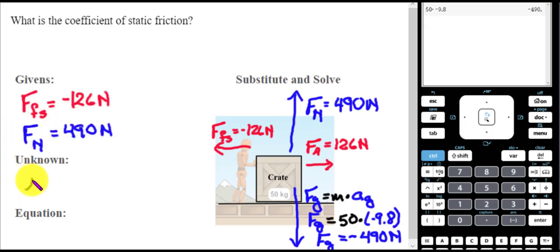Alright, the thing that I am looking for is mu static, and the fun formula tells me that the force of friction static equals mu static times force normal. Okay, now that I got the G, U, and E of my guess technique,